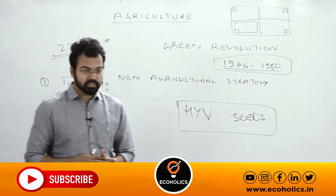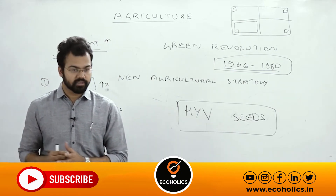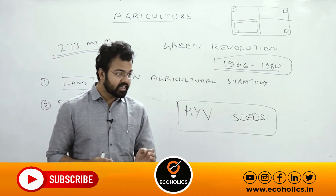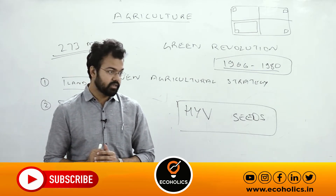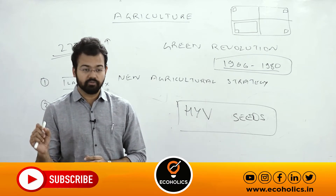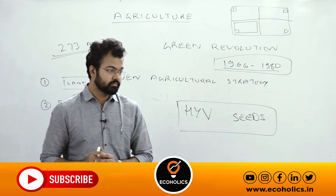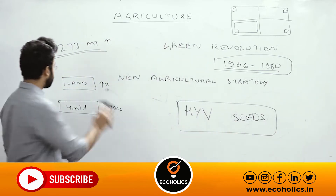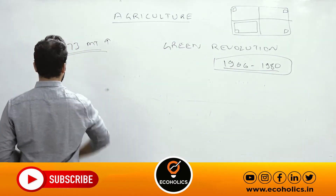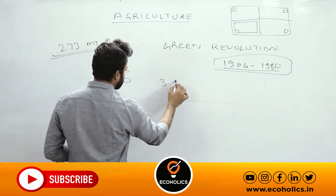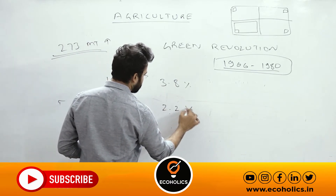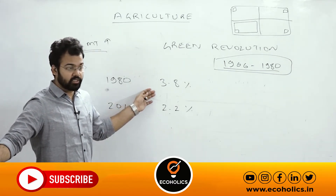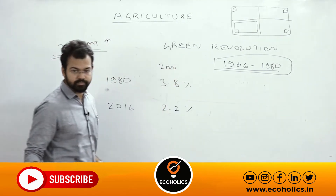Capital formation means converting savings into investment. Capital formation in agriculture — according to exact data published by the Government of India — was around 3.8% of GDP in 1980, and it declined to 2.2% in 2014. This decline of more than 1 percentage point is huge.